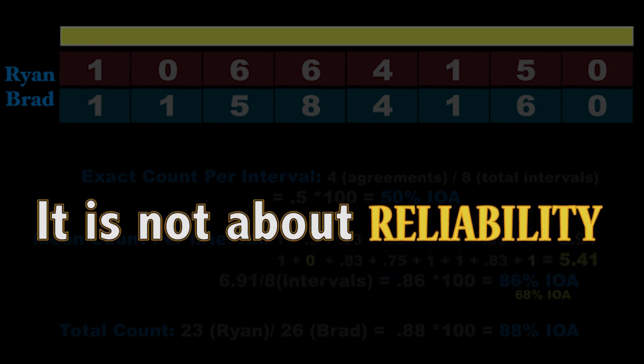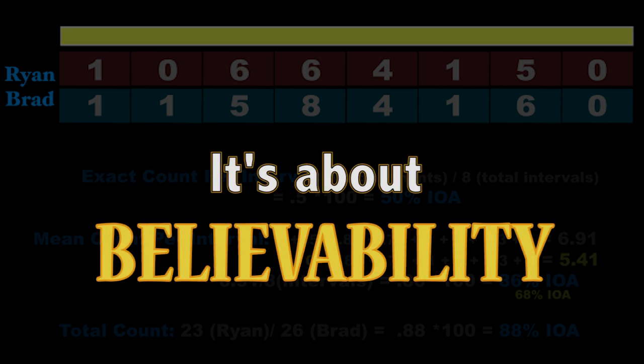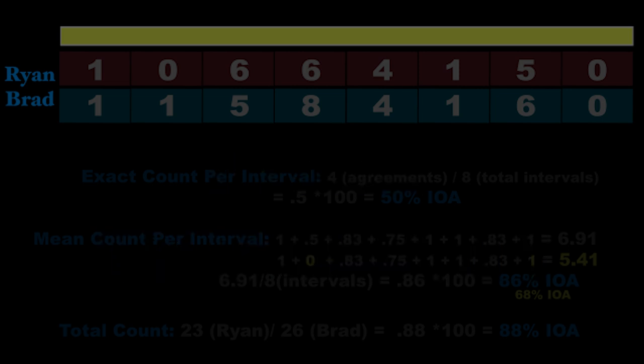This is also an example of why we can't call this inter-rater reliability — because it's not a measure of reliability; it's really a measure of believability. How believable is the data? A lot of times we like to report multiple types. You choose one, but you want to analyze as many as possible to figure out which best represents your data. Exact is hyper-strict; I like mean count per interval for this one. Neither one of us got the correct number of meows according to these observations — and I can tell you for sure there are not 26 meows in the video.